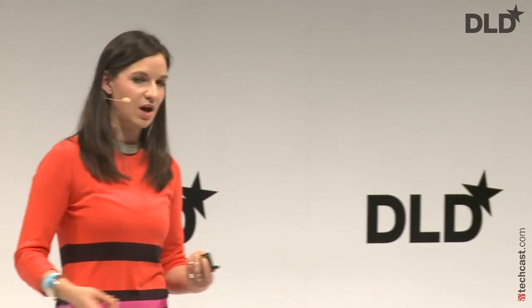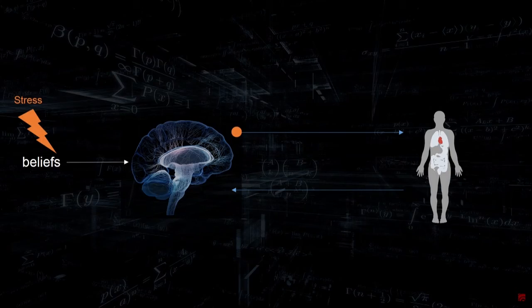That tells us something about how well we actually perceive our own bodies. This is a field called computational psychiatry — using algorithms to understand how the brain interacts with the body and its environment, and how it incorporates information. I want to give you an example that's easy to grasp, which is one that all of you have probably experienced: stress.